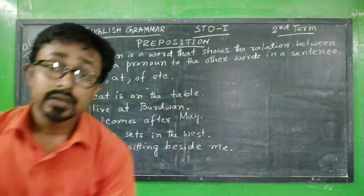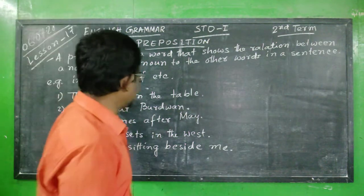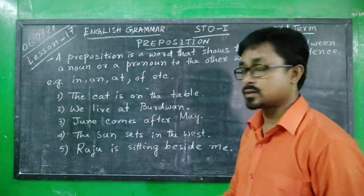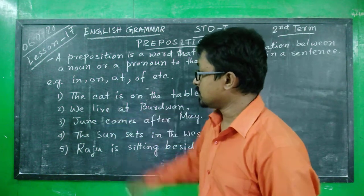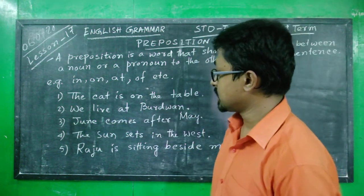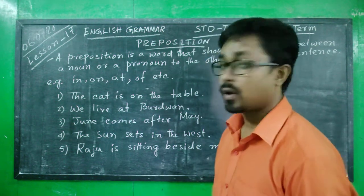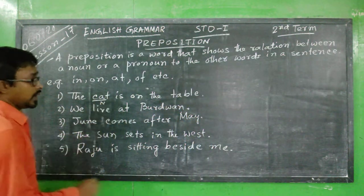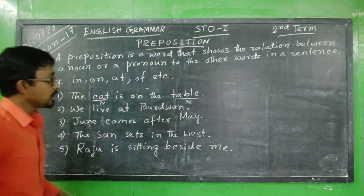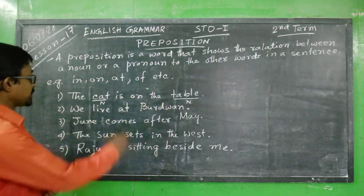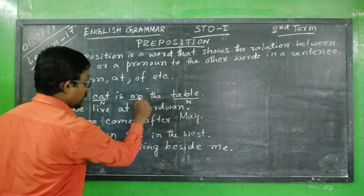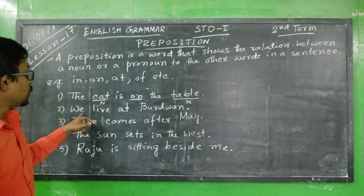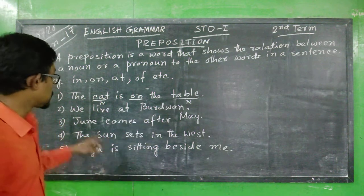To clarify it better, I have written some examples: in, on, at, of, etc. For example — 'The cat is on the table.' Here, 'cat' is a noun and 'table' is also a noun, but there is a relation between them, which is 'on'. So the cat is on the table.